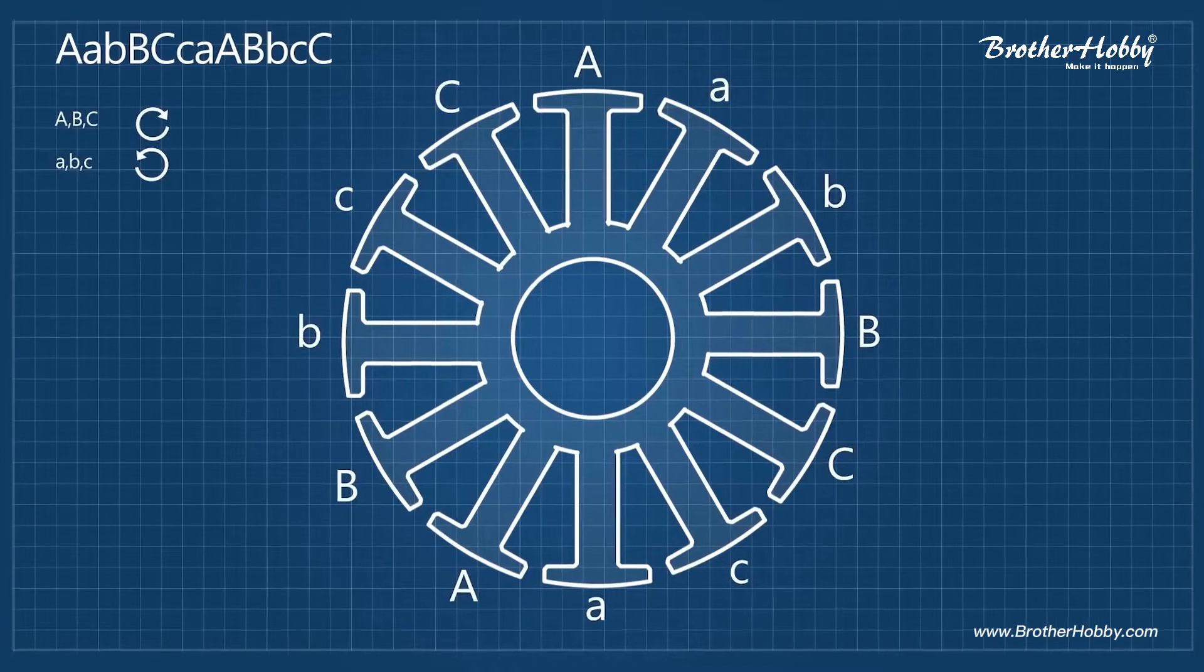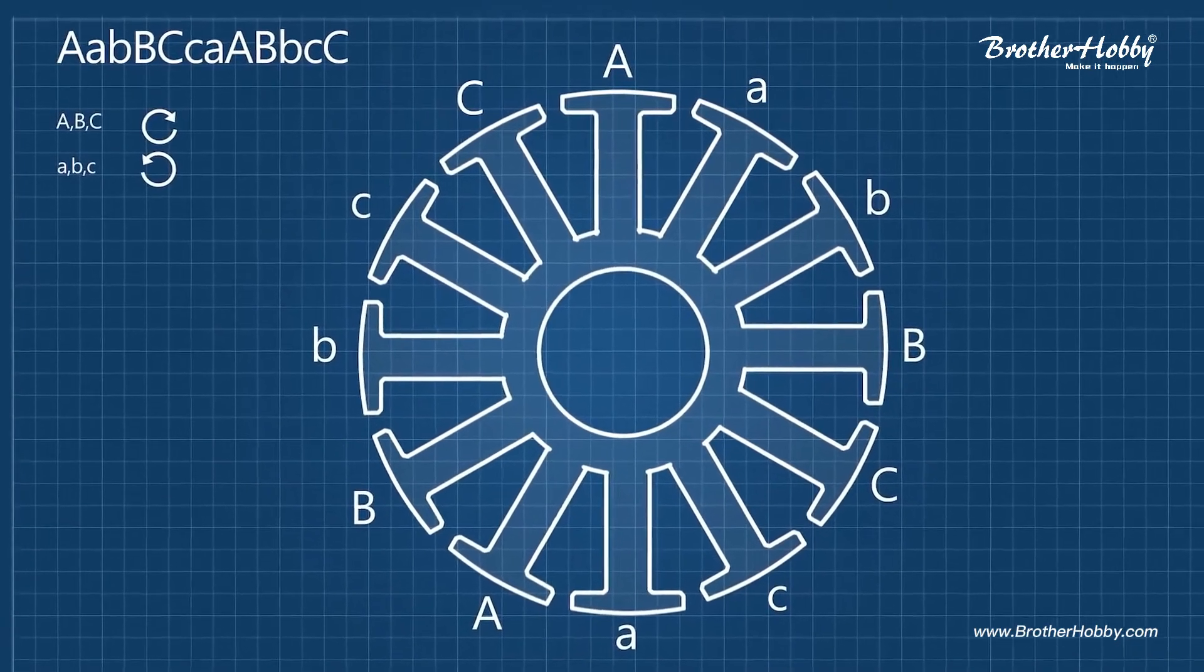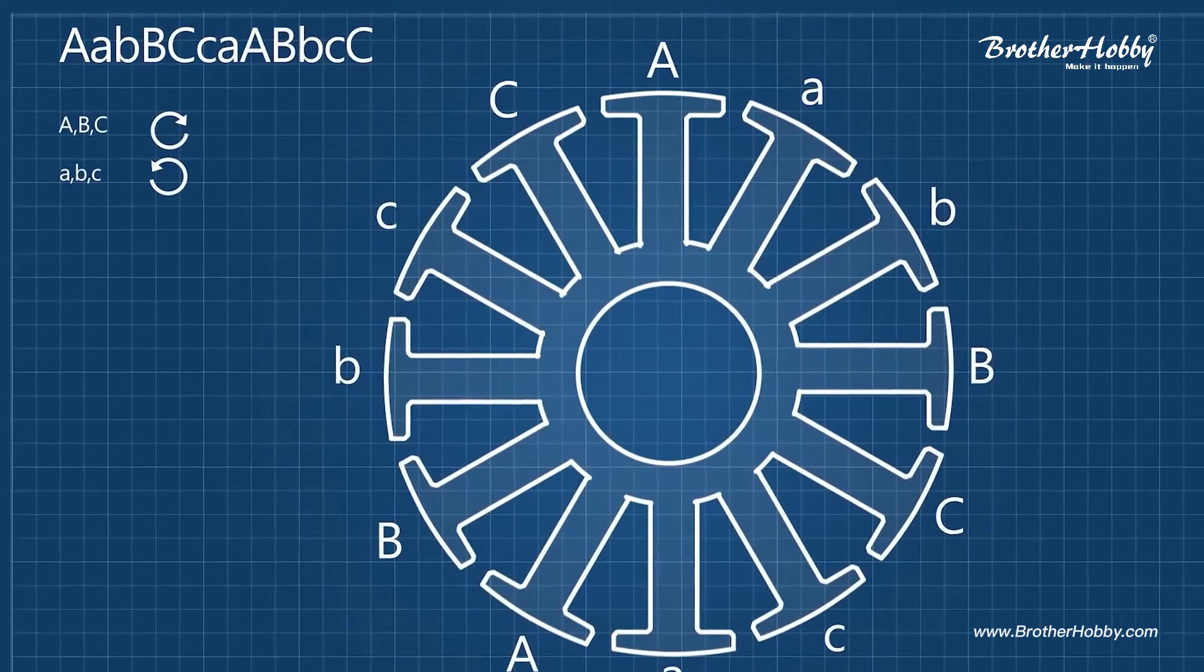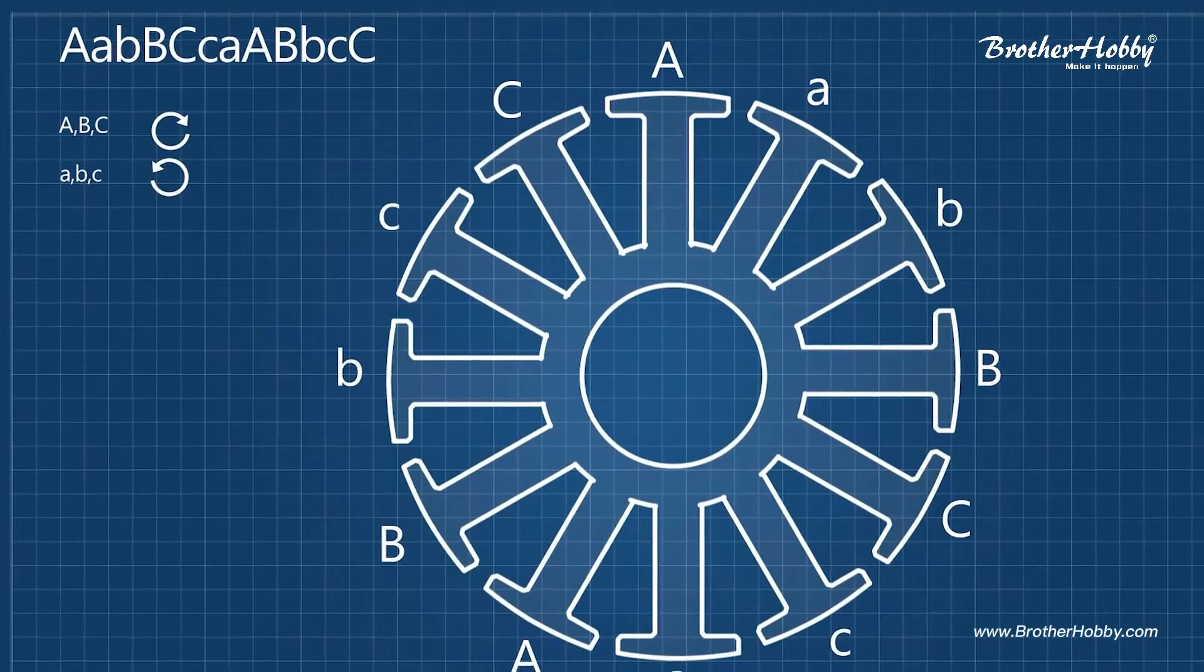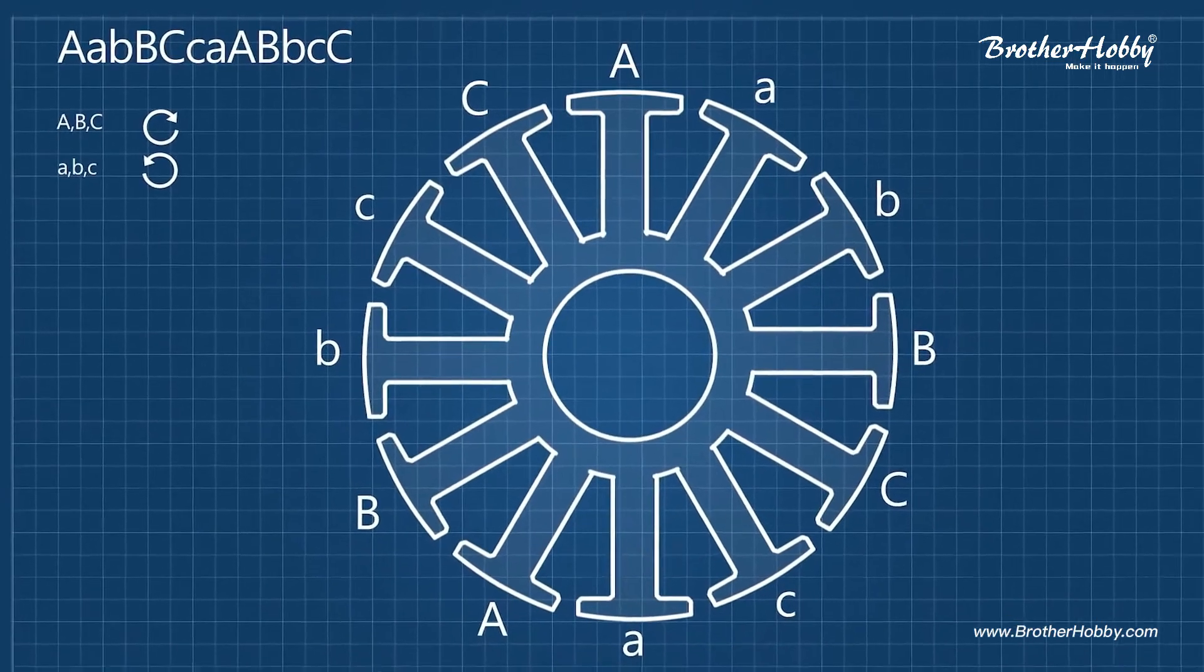So starting from number one in a clockwise direction, we start assigning those letters in order to each pole. It doesn't matter if for capital letters you select to wind in clockwise or counterclockwise direction as long as for the small letters it's the opposite.